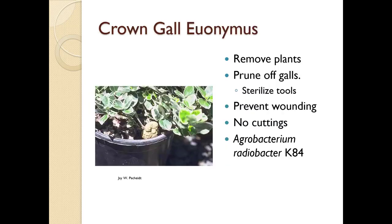Crown gall on euonymus is very common — you're going to see this in many places. You remove the plants, you might be able to prune off the galls, though not likely. Sterilize your tools between cuts, prevent wounding, and don't take cuttings. Agrobacterium radiobacter K84 is actually a biological control for crown gall — it might help in smaller infestations, though this particular plant may be too far gone.